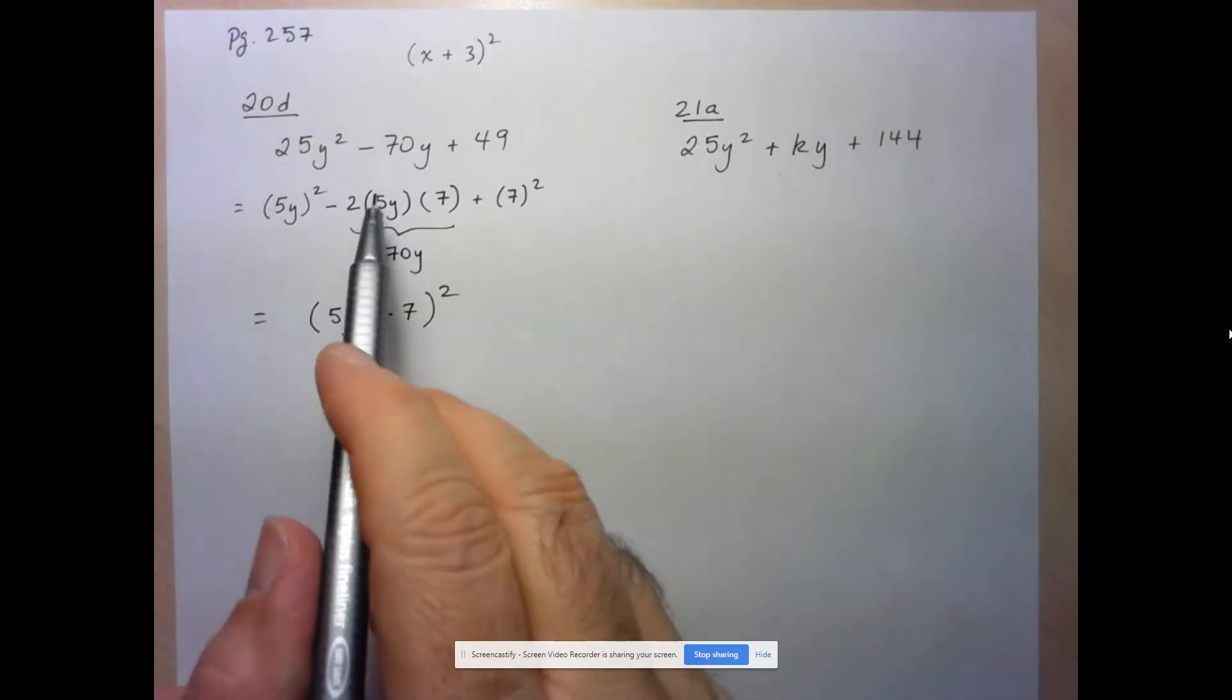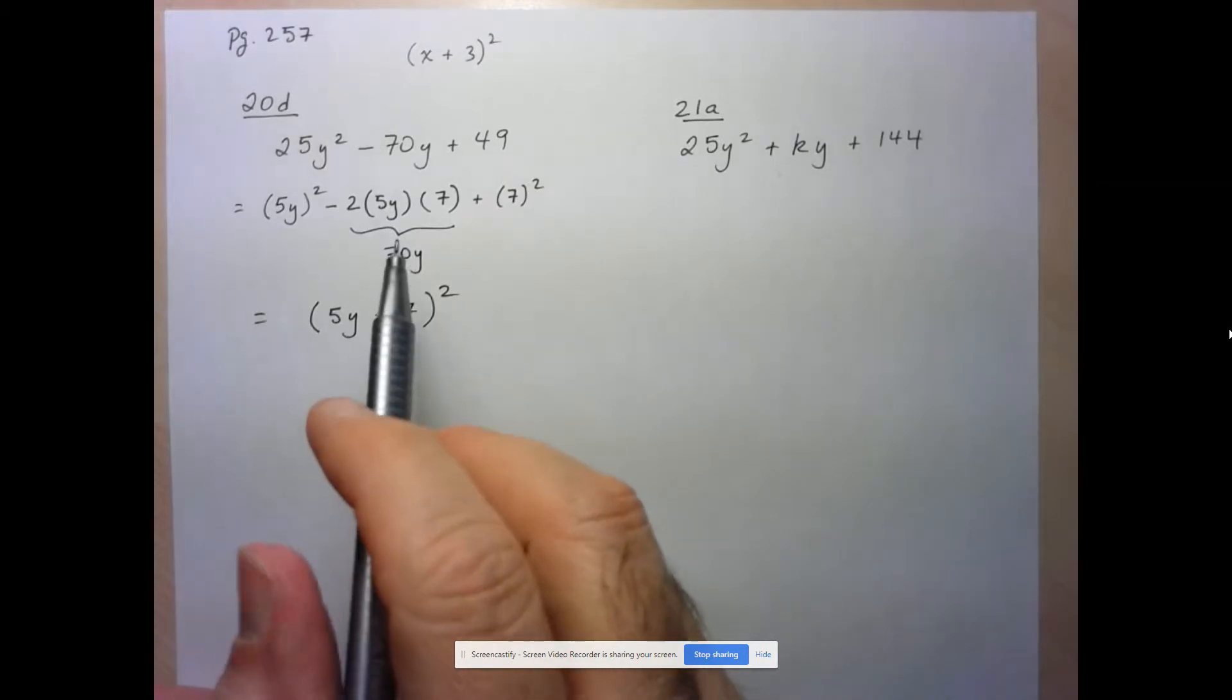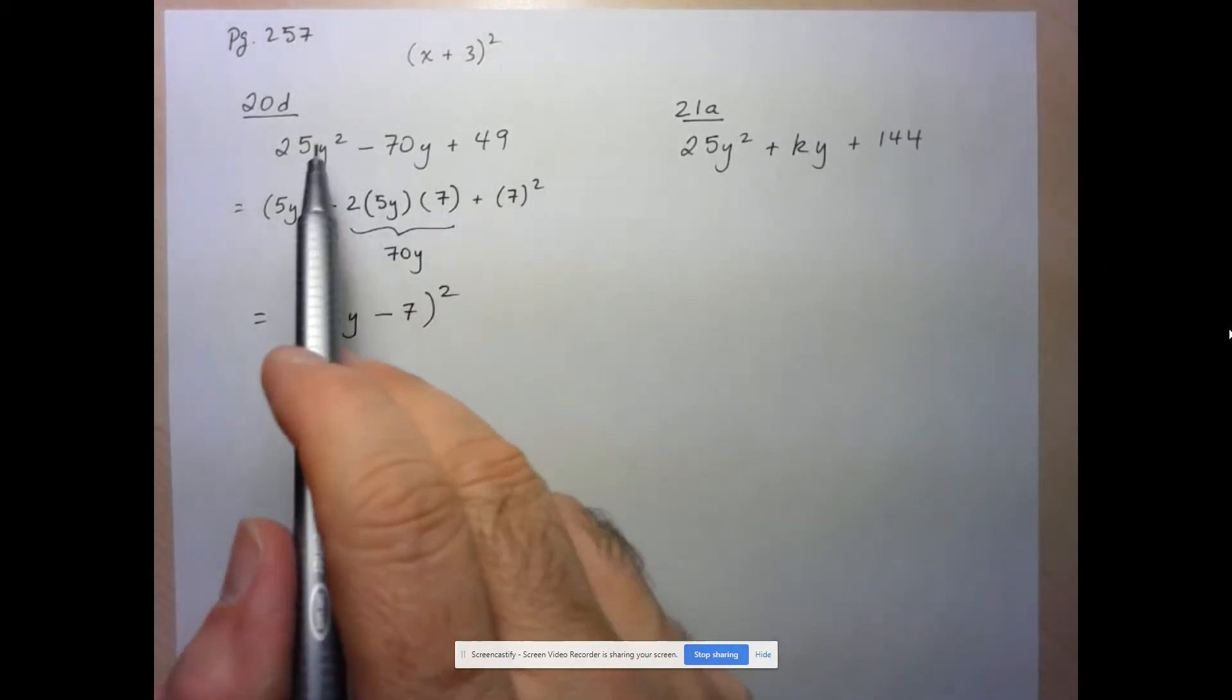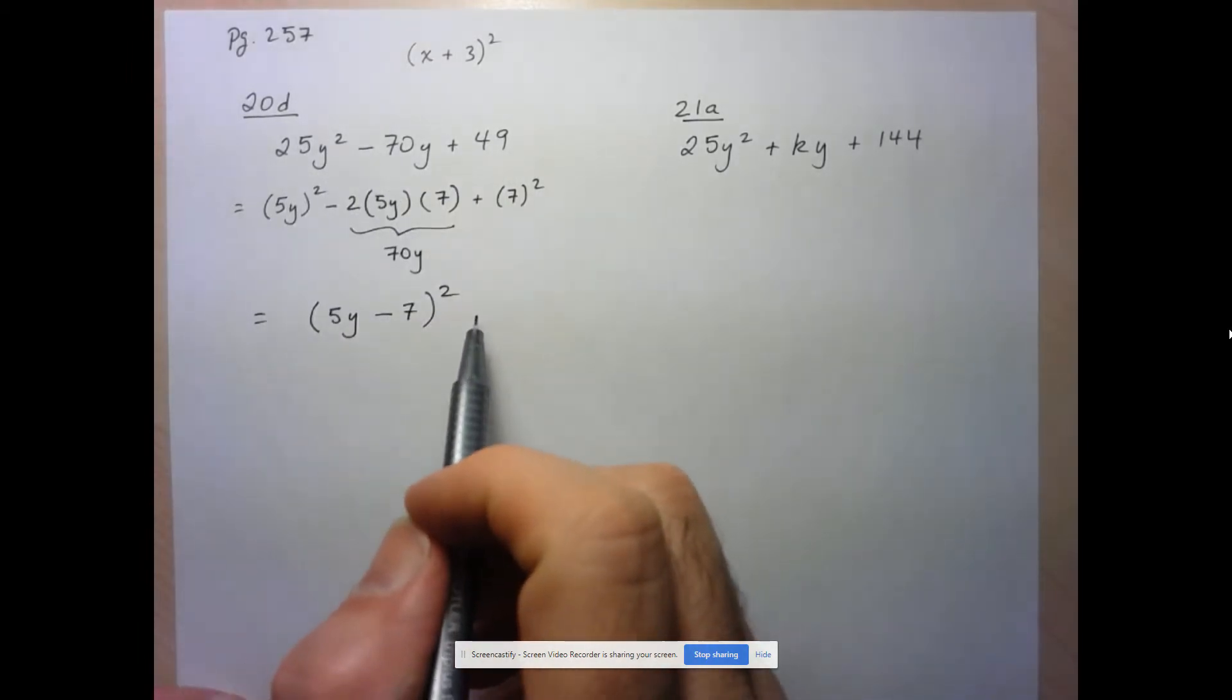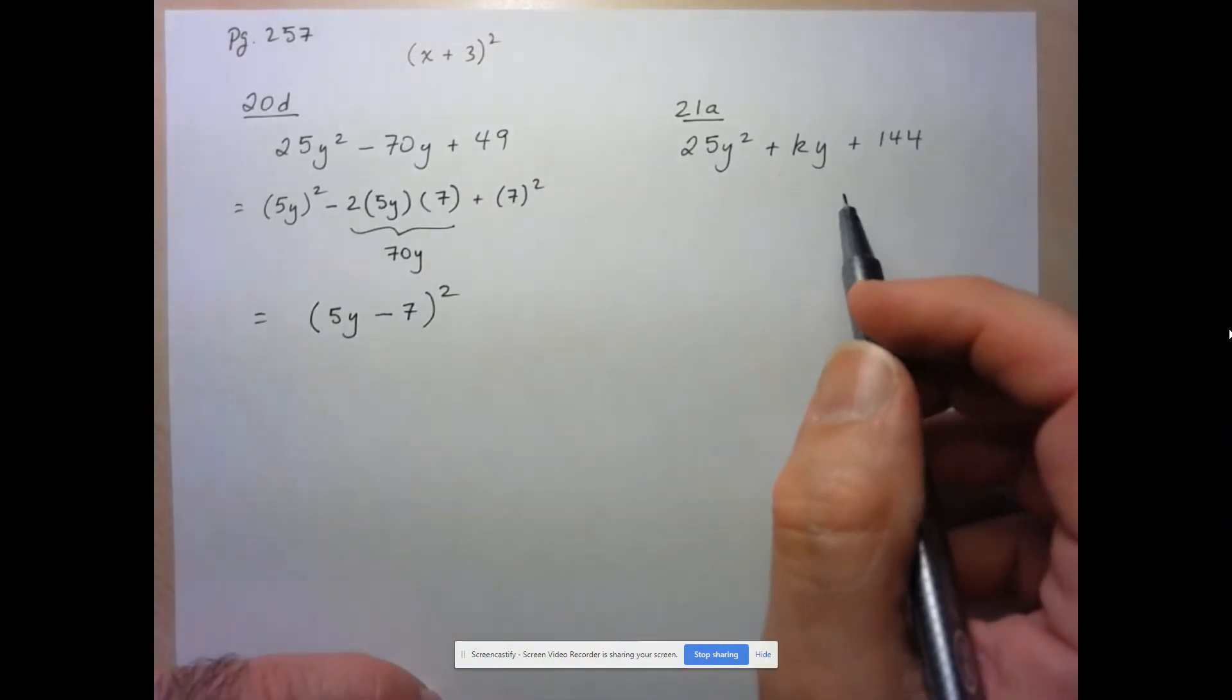So this is how we can recognize whether a trinomial ends up factoring to a perfect square without actually having to do the factoring process, which could be conceivably difficult here since these are not prime numbers. So let's move on to 21a. And 21a is slightly different.